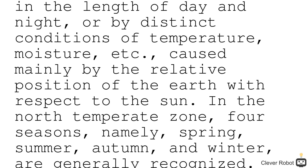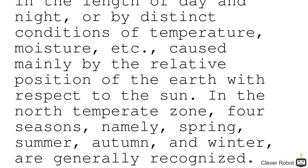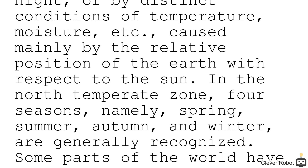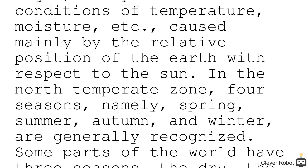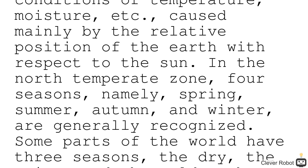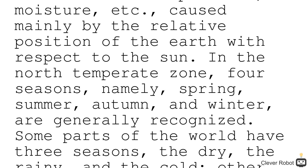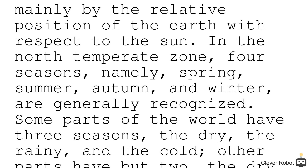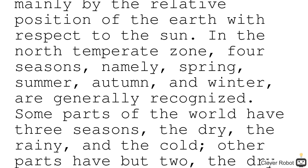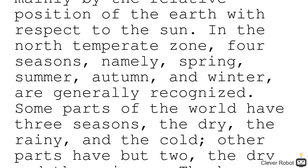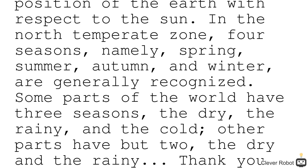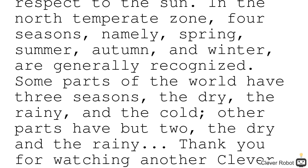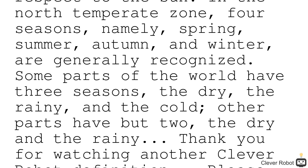In the north temperate zone, four seasons — namely, spring, summer, autumn, and winter — are generally recognized. Some parts of the world have three seasons: the dry, the rainy, and the cold. Other parts have but two: the dry and the rainy.